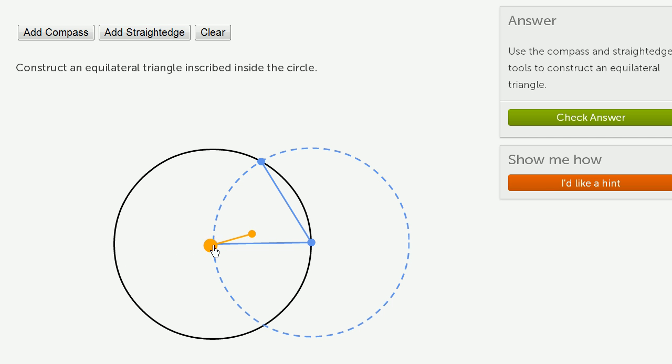Now, if I were to connect that point to that point, this is a radius of our original circle. And so it's going to have the same length as these two. So this right over here, I have constructed an equilateral triangle.